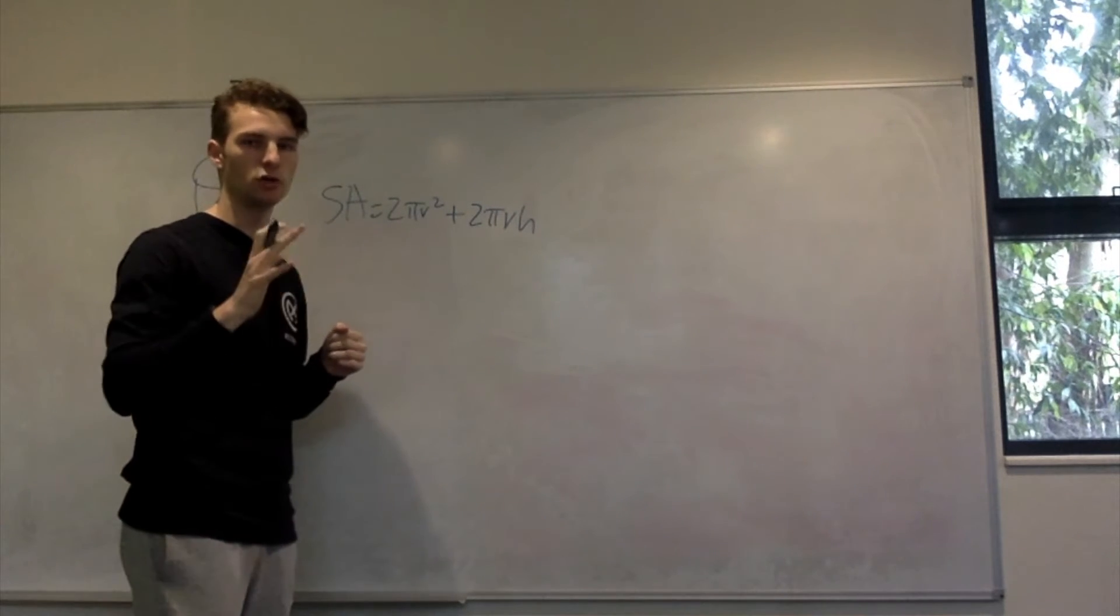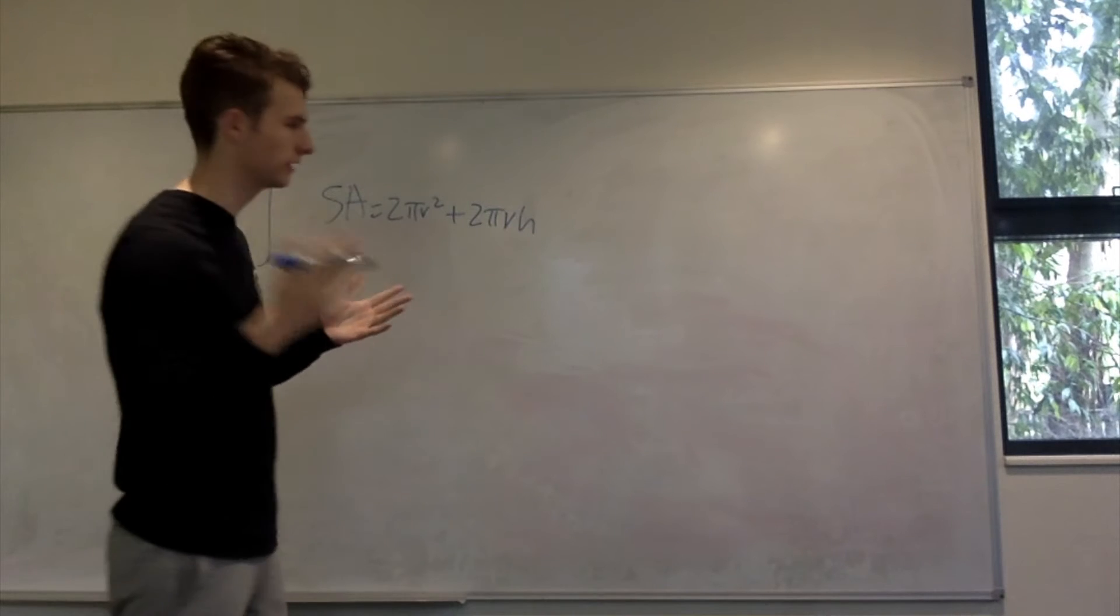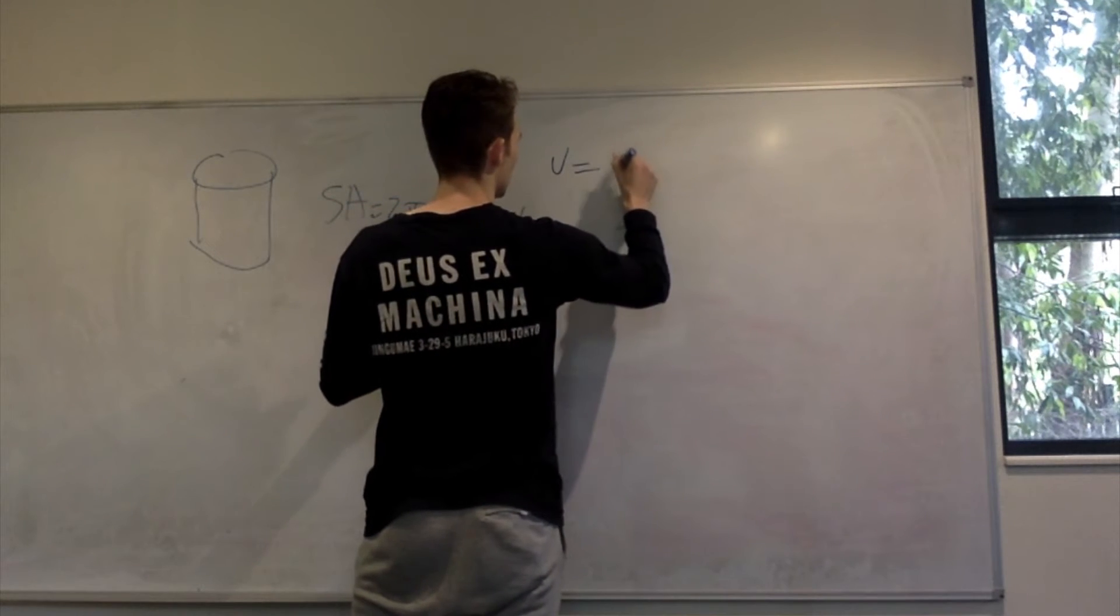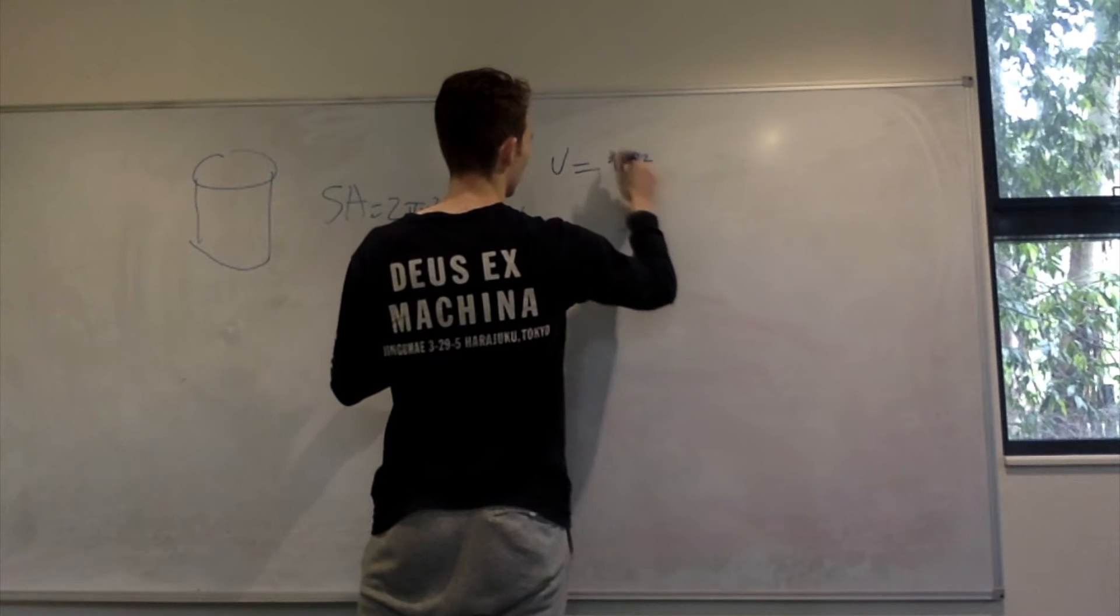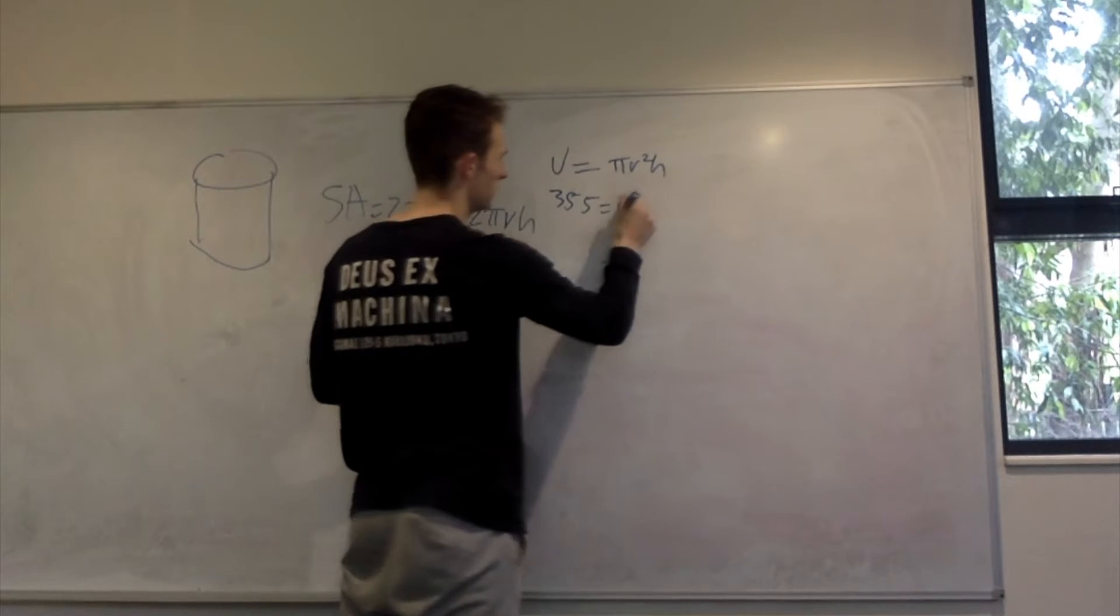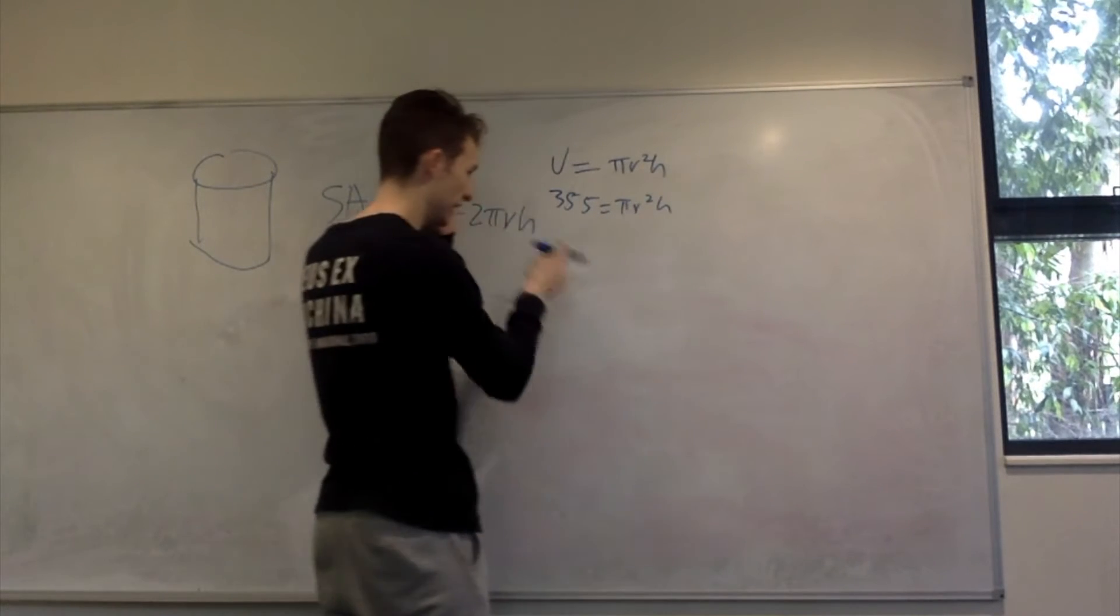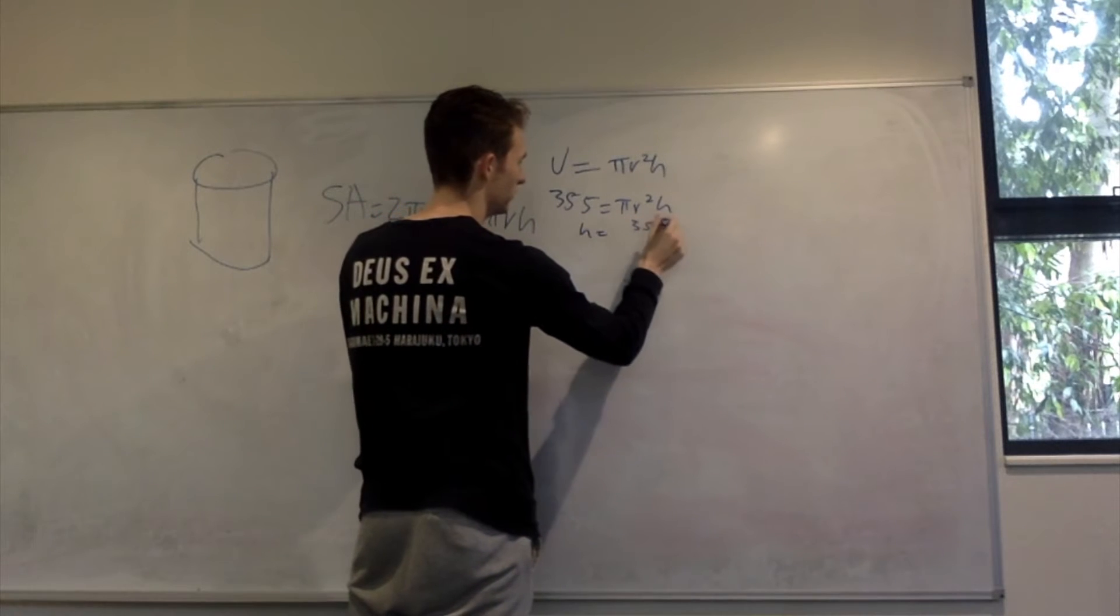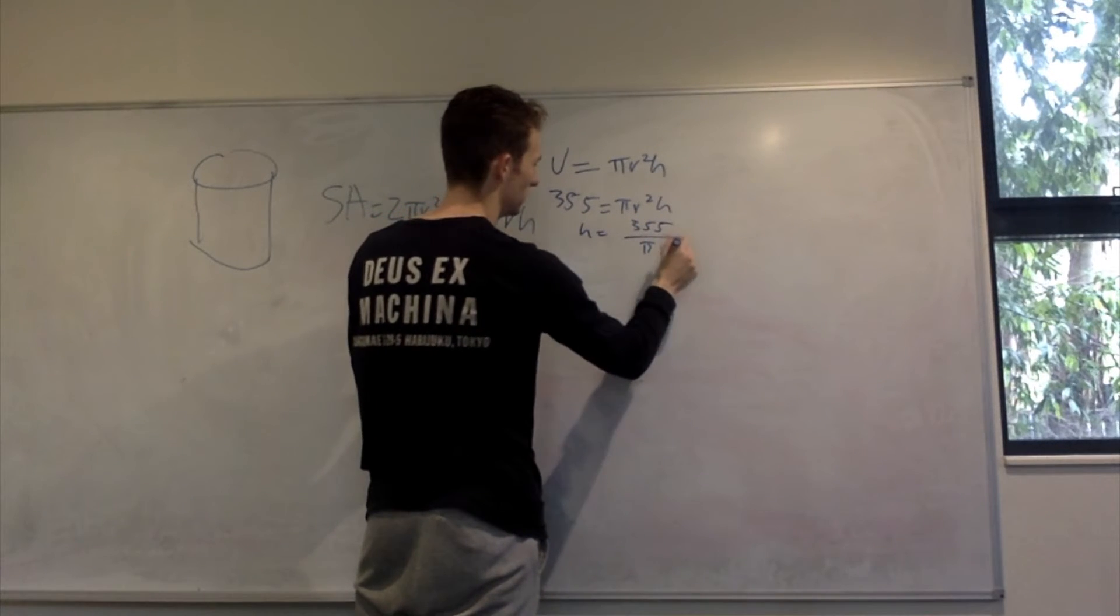We've also been given a constraint, the volume has to be about 355 mL for the can. So V = πr²h. This V is now 355 in millilitres, πr²h. Let's solve for h so we can get rid of this variable here. h = 355/πr². Let's substitute in.